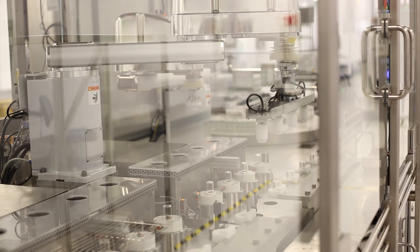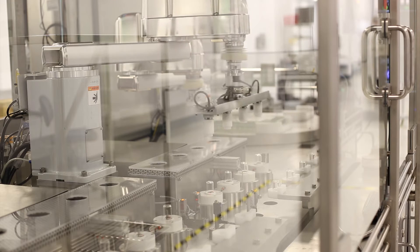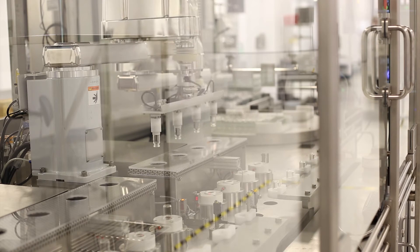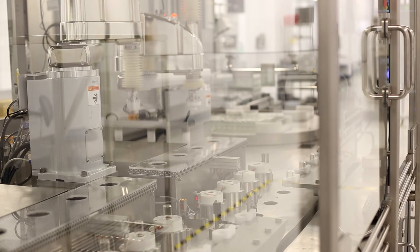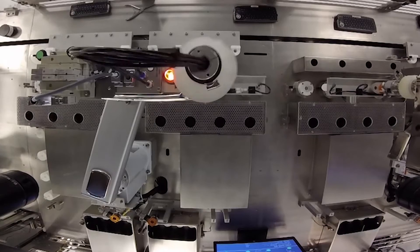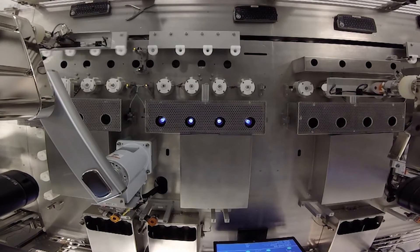Coatings are deposited by a vacuum-based process known as plasma-enhanced chemical vapor deposition. The process starts by first forming an airtight seal and then removing the air from inside of each vial.